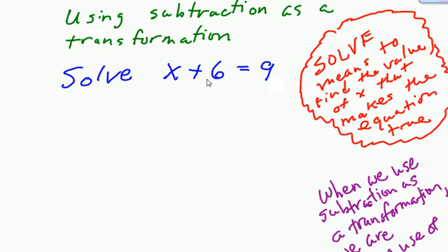Since we're building toward solving multi-step equations, we're trying to develop the steps we're going to use to perform that kind of task. I obviously realize that an equation like this you could do without algebra, but we're building something here, so we're going to take steps we wouldn't need if this were as hard as it gets. You can see the value for x is 3, but we're going to do transformations to solve this so that when we have multi-step equations, we know what to do.